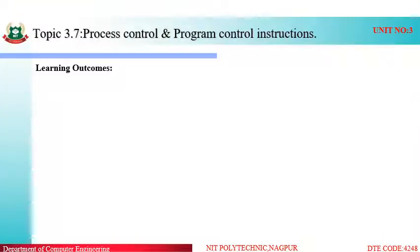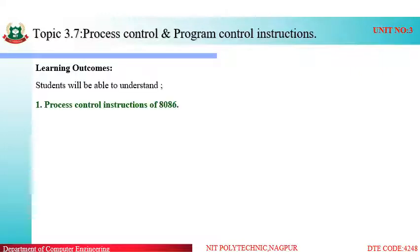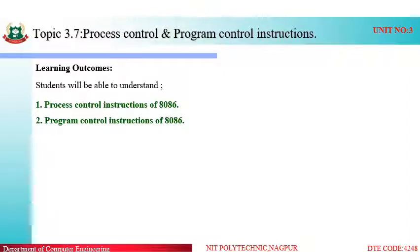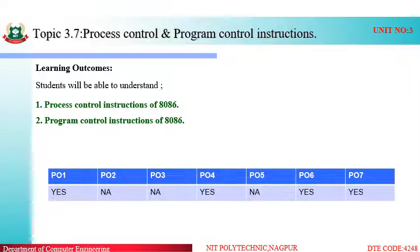The learning outcomes of this video are to study the different process control instructions of 8086 and the different program control instructions of 8086. The POs mapped are PO1, PO4, PO6, and PO7.